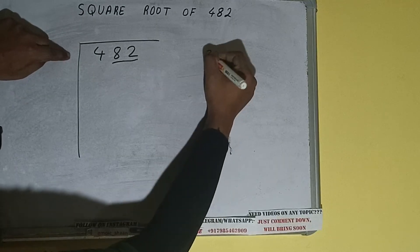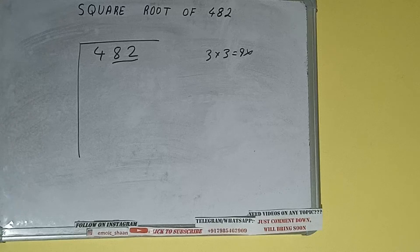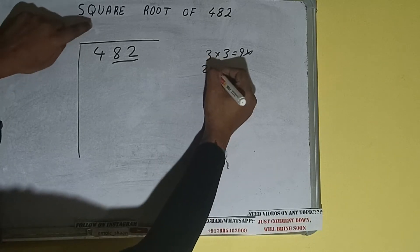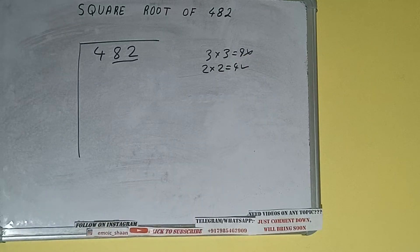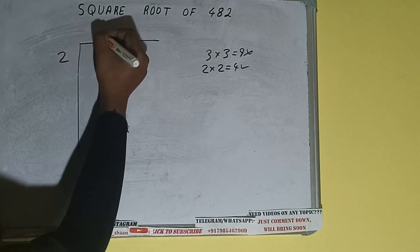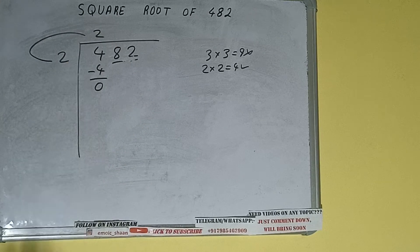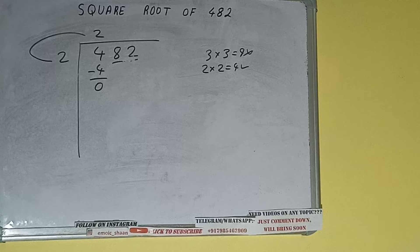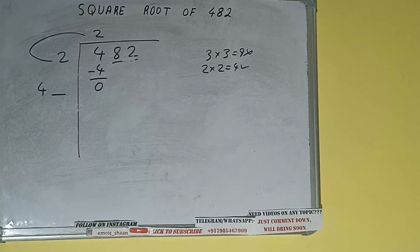We'll write 3 here and 3 here — it will be 9, which is greater than 4, so we cannot use it. If we write 2 here and 2 here it will be 4, which is good. So 2 here and 2 here: 4 subtract 0 will be left. We did 2 into 2, so add both: 2 plus 2 will be 4. Write it here and keep a digit extra.